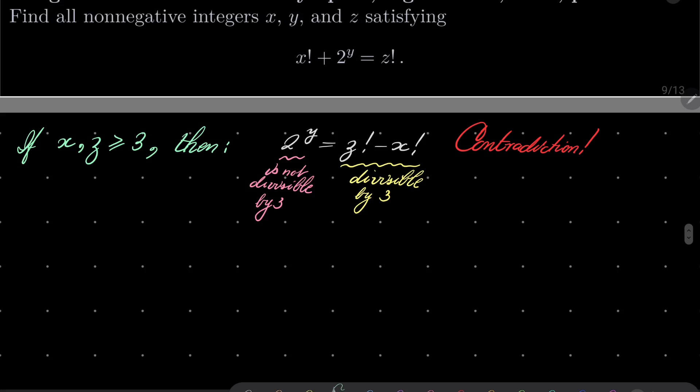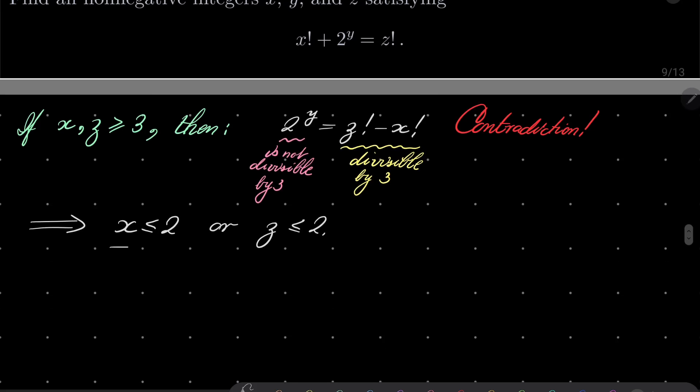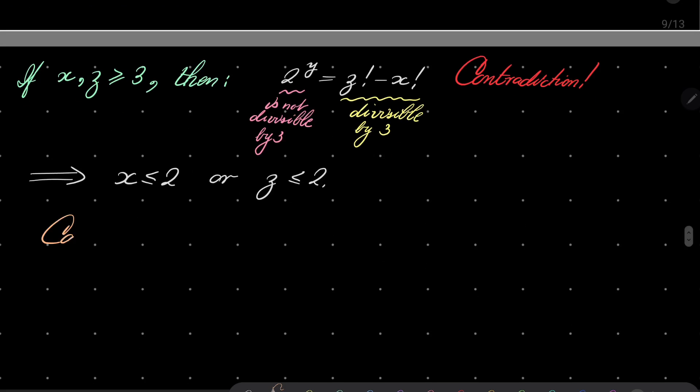Which means that either x must be less than or equal to 2 or z must be less than or equal to 2.